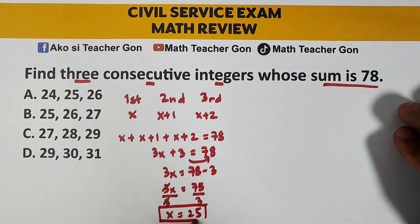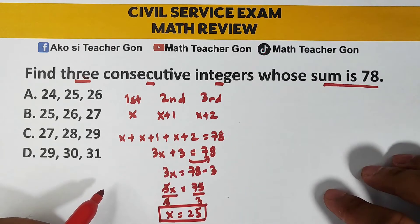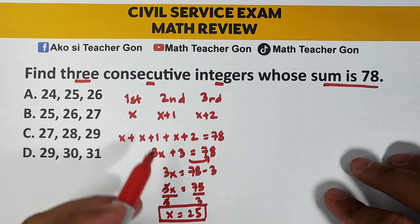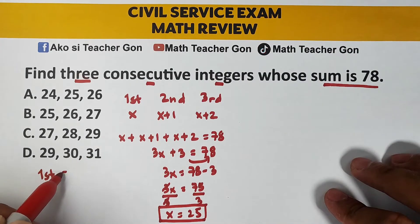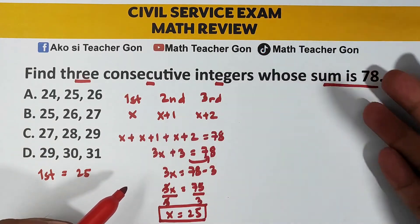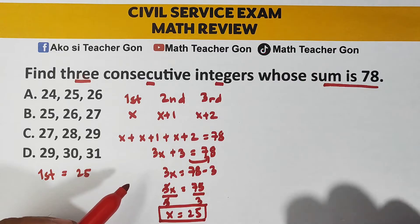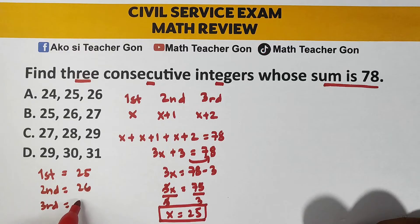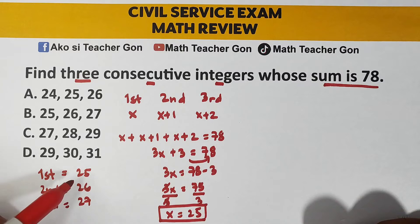Ito ngayon yung value ng x natin. Now, going back with our representation, since x is represented as the first integer, ang first integer natin dito is 25. And sabi dun, 3 consecutive integers. So, if the first is 25, your second integer is 26, followed by the third integer, which is 27. And these are the integers: 25, 26, and 27.